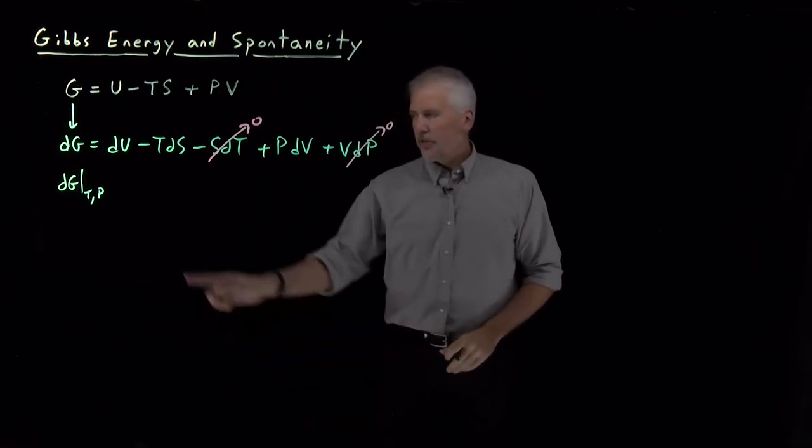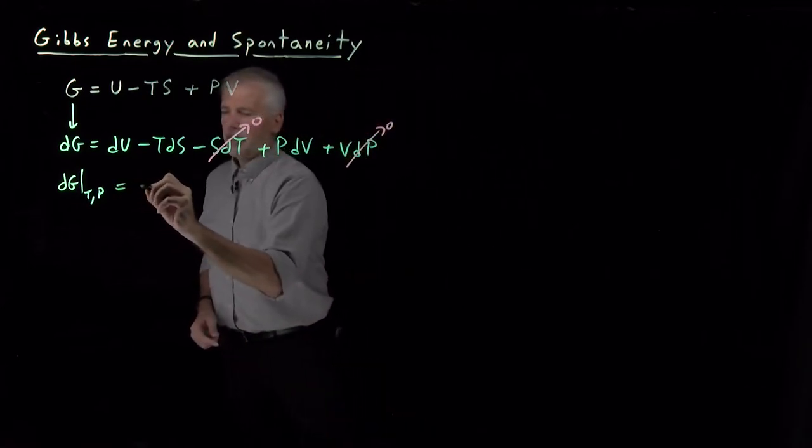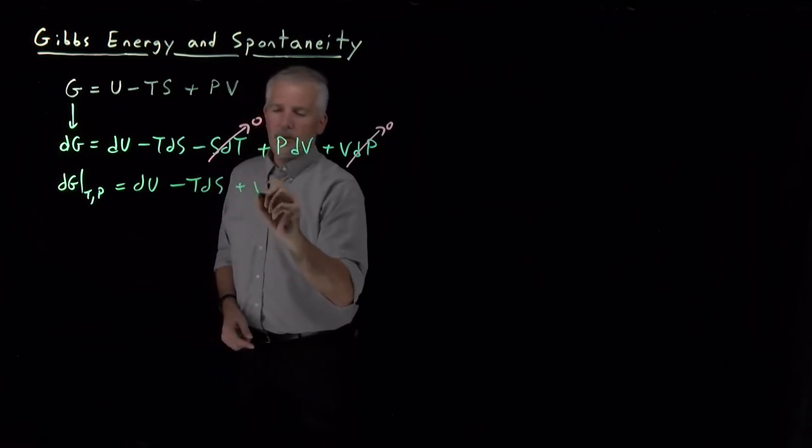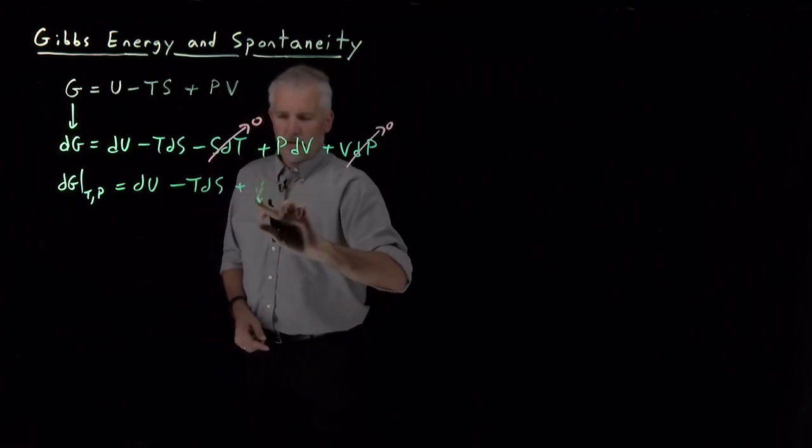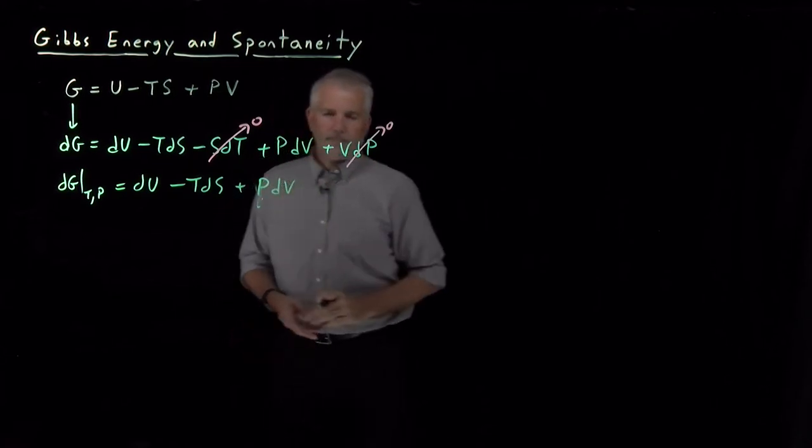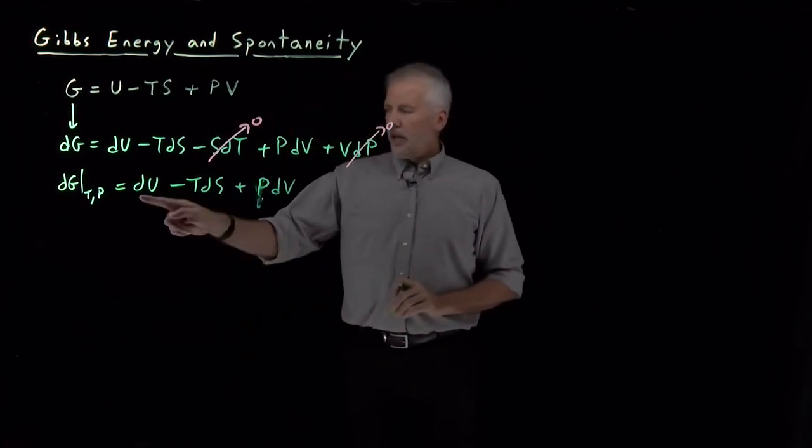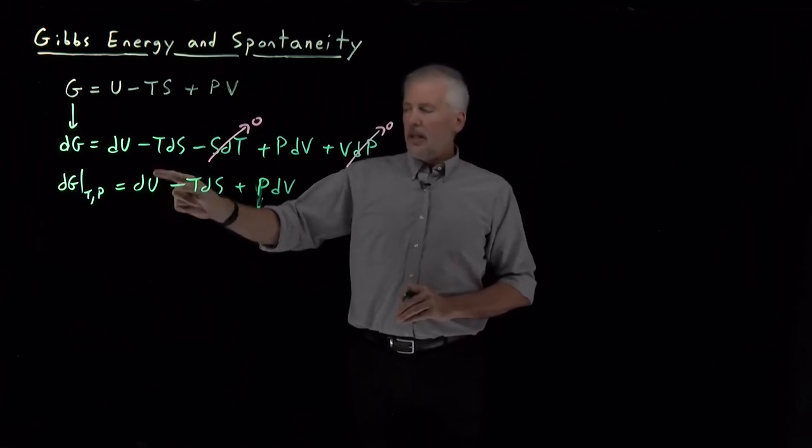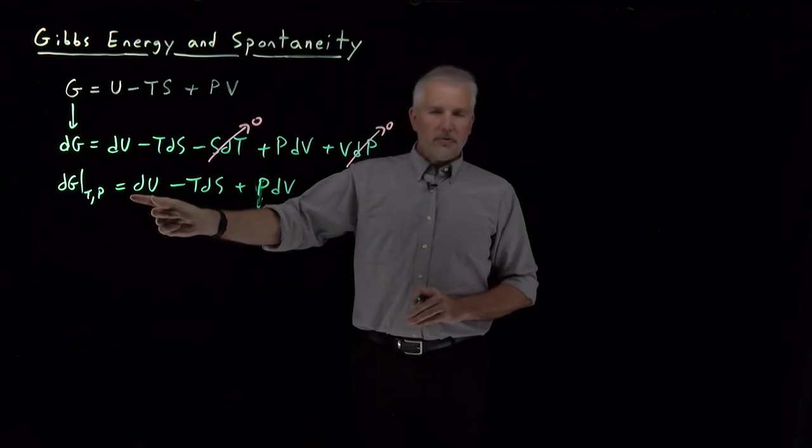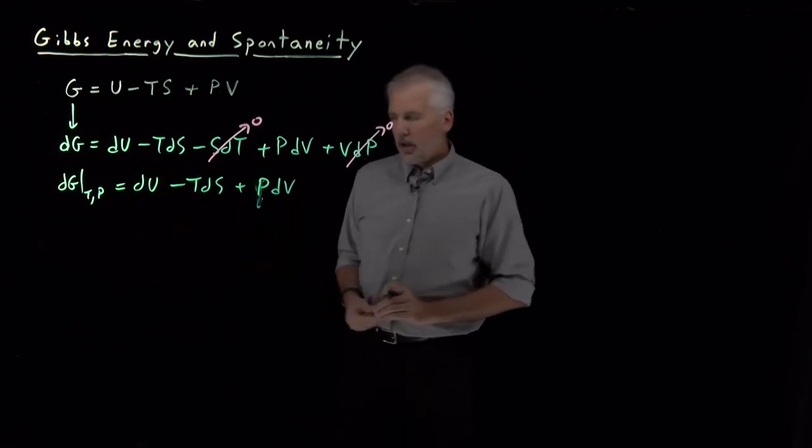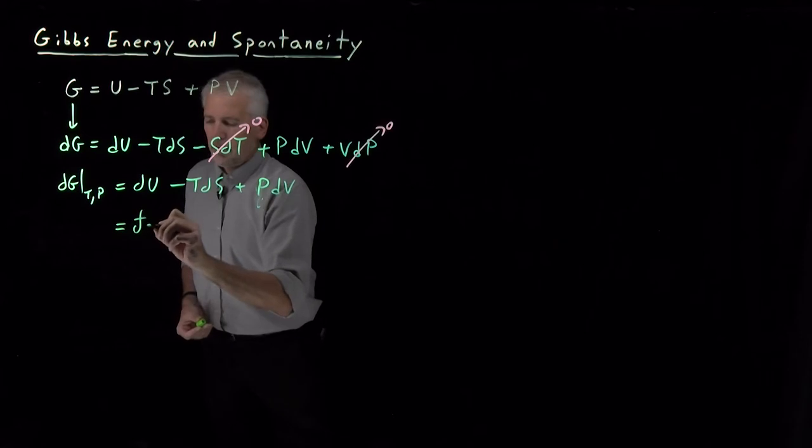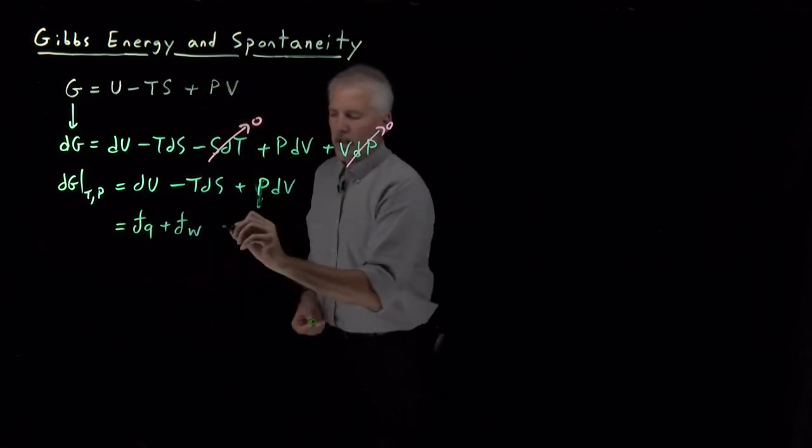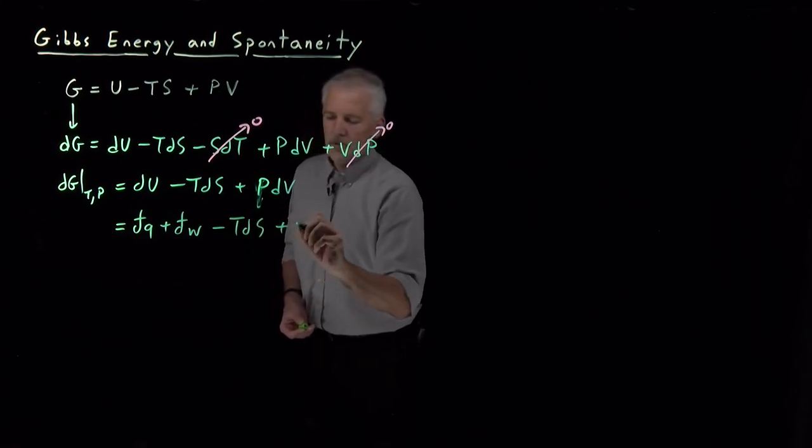Under conditions of constant temperature and pressure, I can rewrite this as dU - TdS + PdV. This is the reason I didn't want to start directly from the fundamental equation for dG. Instead of using the fundamental equation for dU, I'm going to use the first law and rewrite dU as dq plus dw, so we have dq + dw - TdS + PdV.